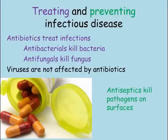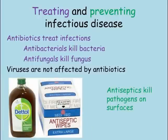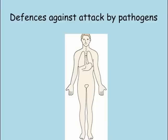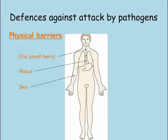Better than treating an infectious disease is trying to avoid getting it in the first place. Antiseptics are chemicals used to prevent the spread of infection by using them to clean surfaces. The body also has a series of defences that prevent pathogens from getting inside. These include physical barriers such as skin, cilia, and mucus, as well as chemical defences that kill pathogens on contact, such as hydrochloric acid in the stomach and lysozymes in tears. For a pathogen to cause a disease, it would need to get past all of these defences.